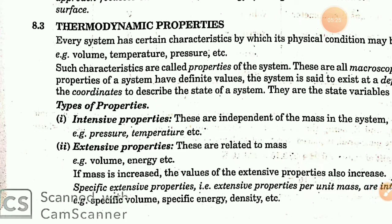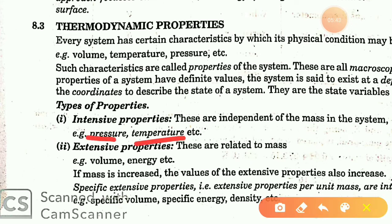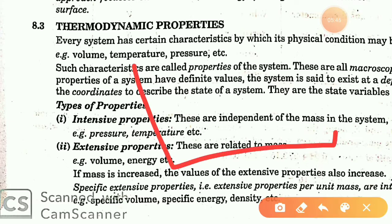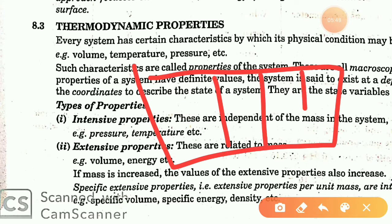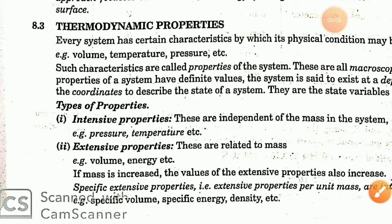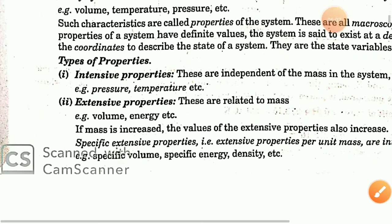An extensive property depends on the mass of the system. If the mass changes, the extensive property changes. An intensive property, such as pressure or temperature, is independent of mass — it does not depend on how much mass is present.